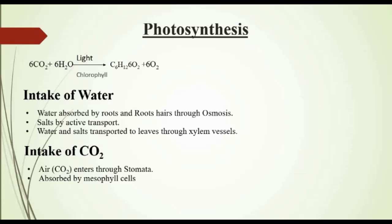How does water intake occur? Water is absorbed from soil by roots and root hairs through osmosis, and salts by active transport. Water reaches the leaves through the xylem vessels. You will study about them in chapter 9 in detail. How does intake of CO2 take place? The air that enters leaves through tiny pores called stomata reaches into the air spaces present around mesophyll cells, which are the specialized cells for photosynthesis. This air carries CO2, which gets absorbed in the thin layer of water surrounding mesophyll cells, and then the carbon dioxide diffuses into mesophyll cells.